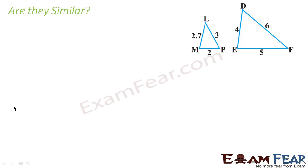Here we have to find whether the triangles are similar or not. If you try 2.7 by 4, that will not be equal to 3 by 6. So we can't compare this side with that side. Also if we try to compare 2.7 by 5, that will not be equal to 3 by any other side. So if you try any way, you'll find that the sides are not proportional.